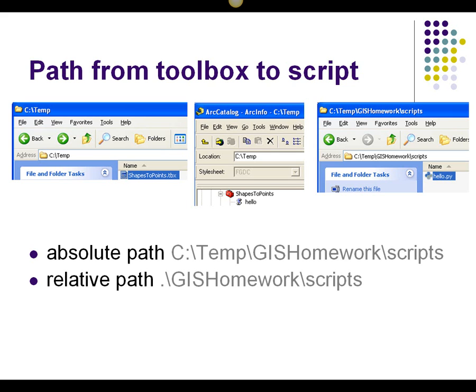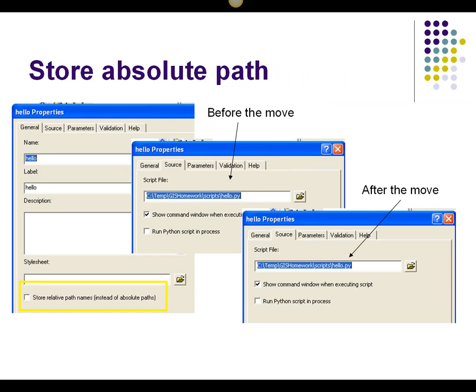The file address functions like a postal address. The script's relative path to the toolbox is two directories below the toolbox's directory. When you add a script tool to a toolbox, you are given a choice about the type of path you want to use.